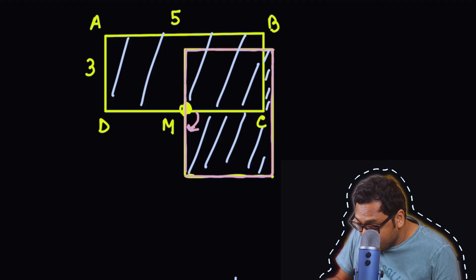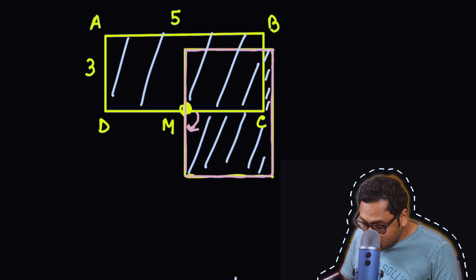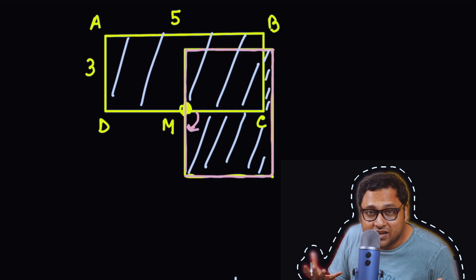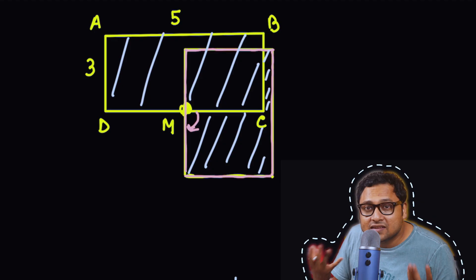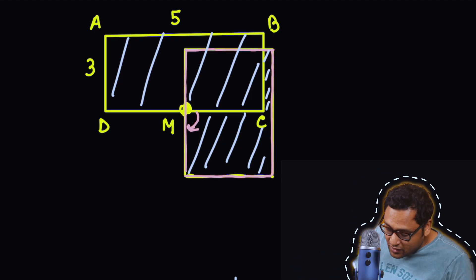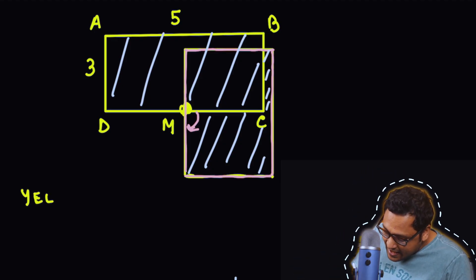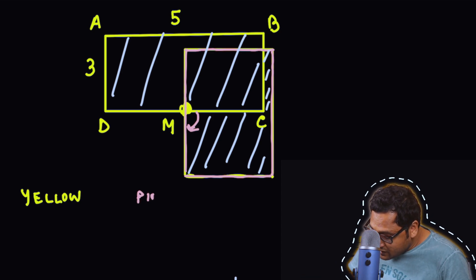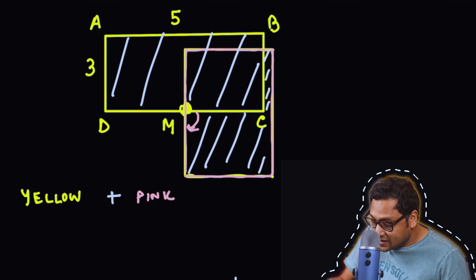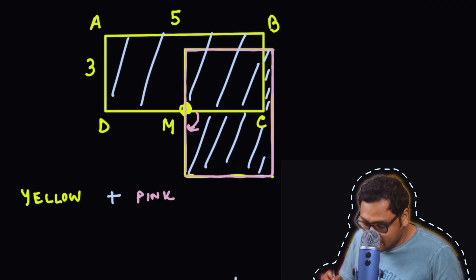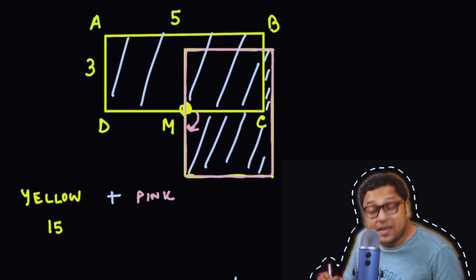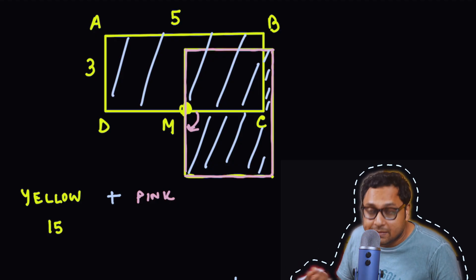How do we go about it? Notice that ABCD, even after rotation, will have the same area. So the yellow and the pink, both of them will have the same area. What is the area of the yellow rectangle? It is 3 times 5, that is 15. What is the area of the pink rectangle? It's also 3 times 5, 15.